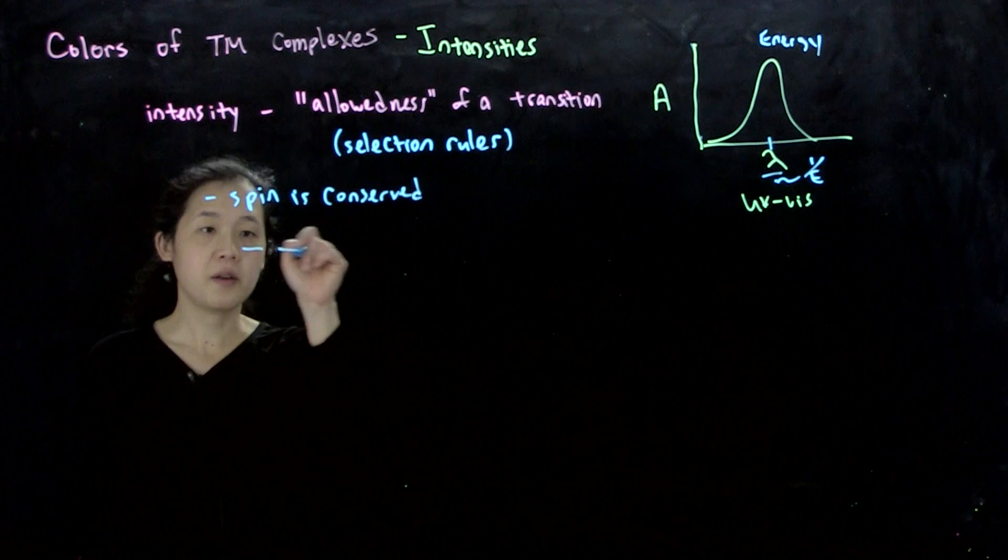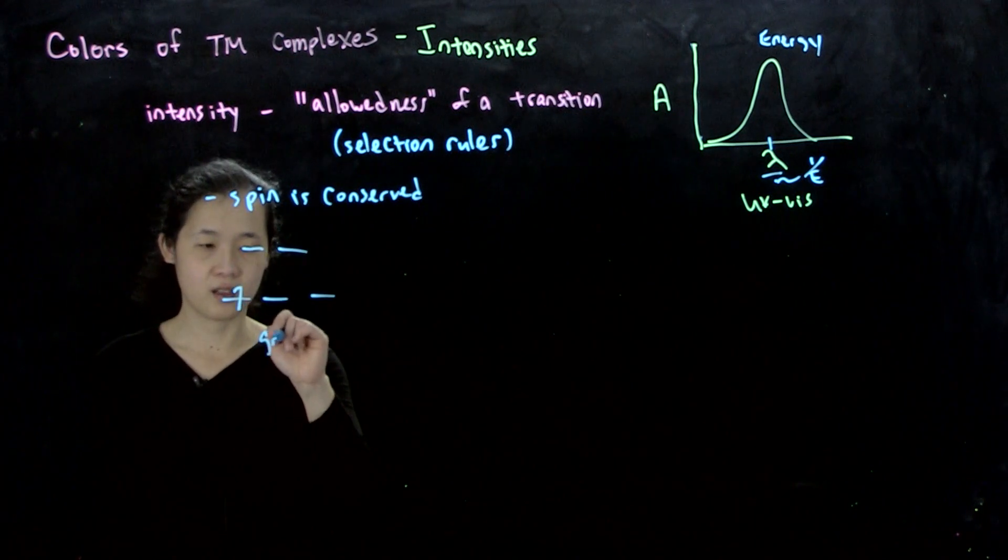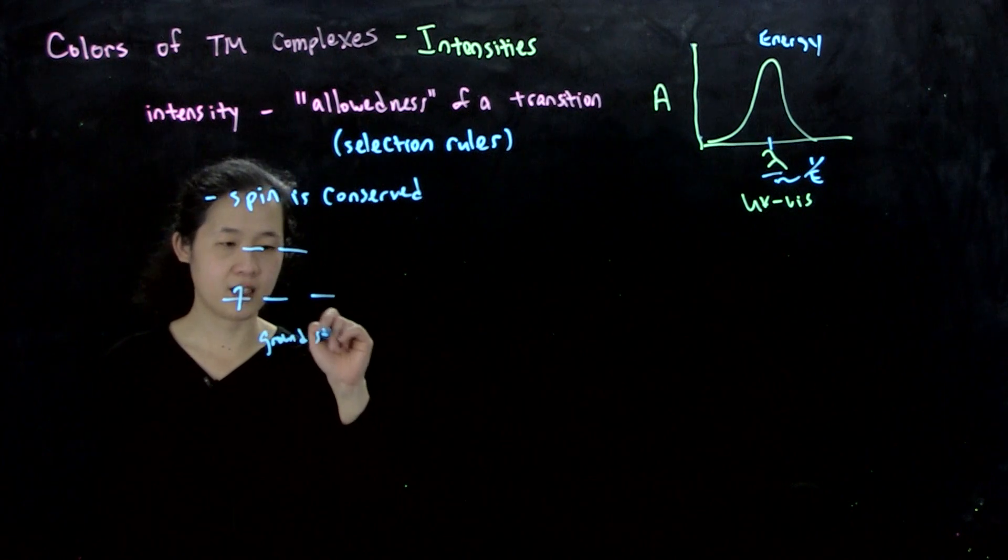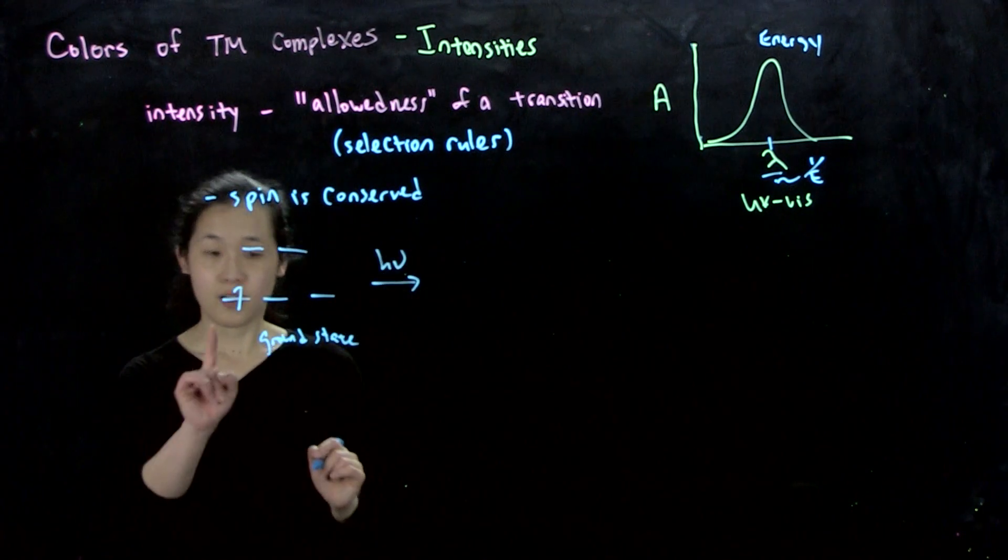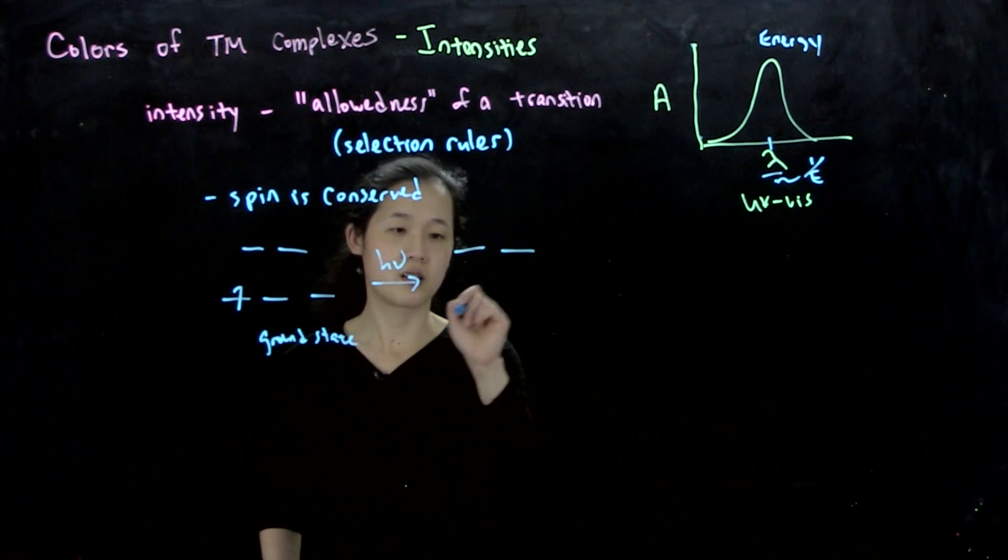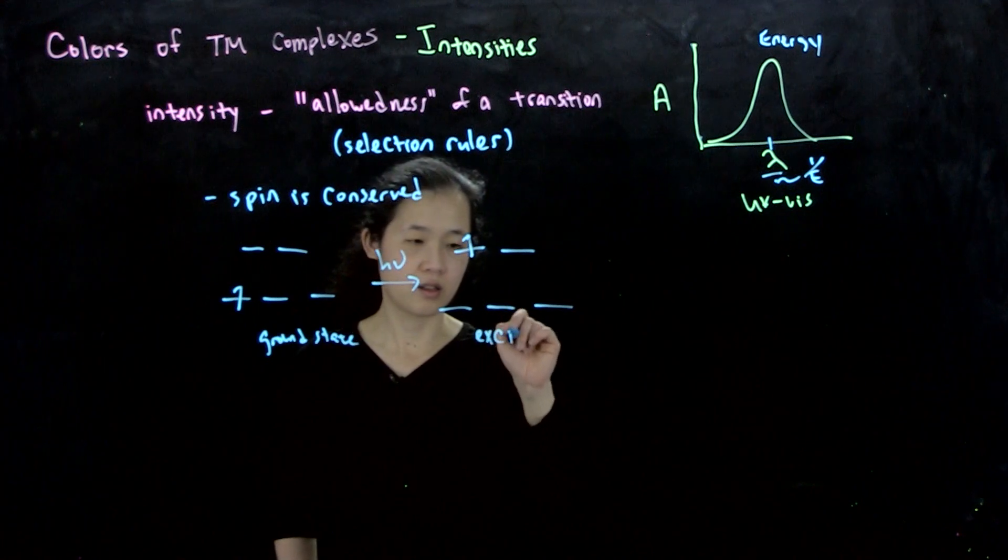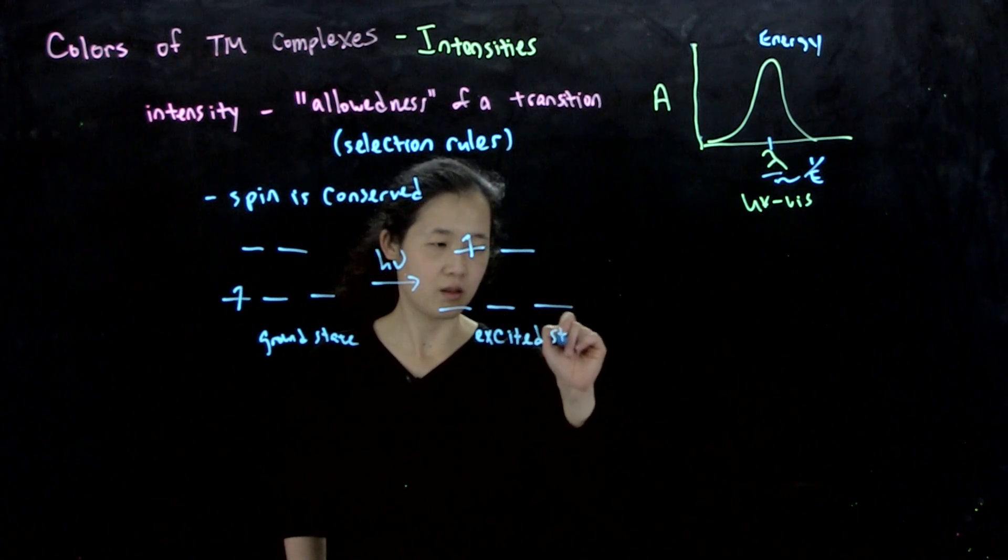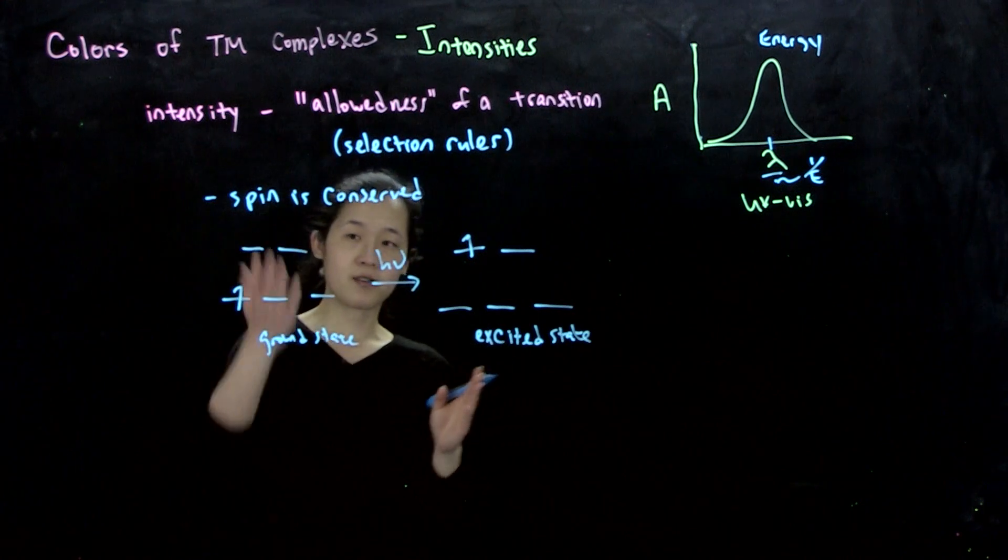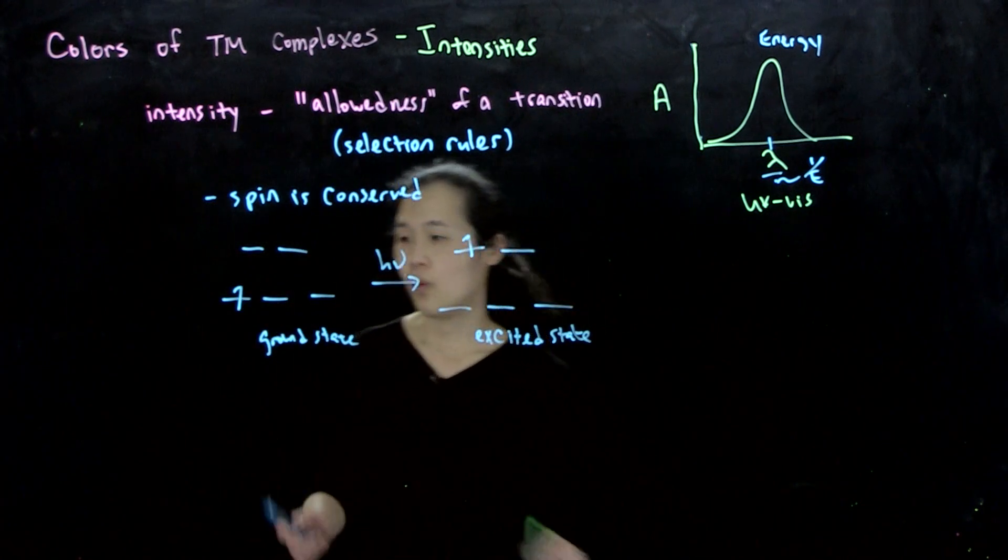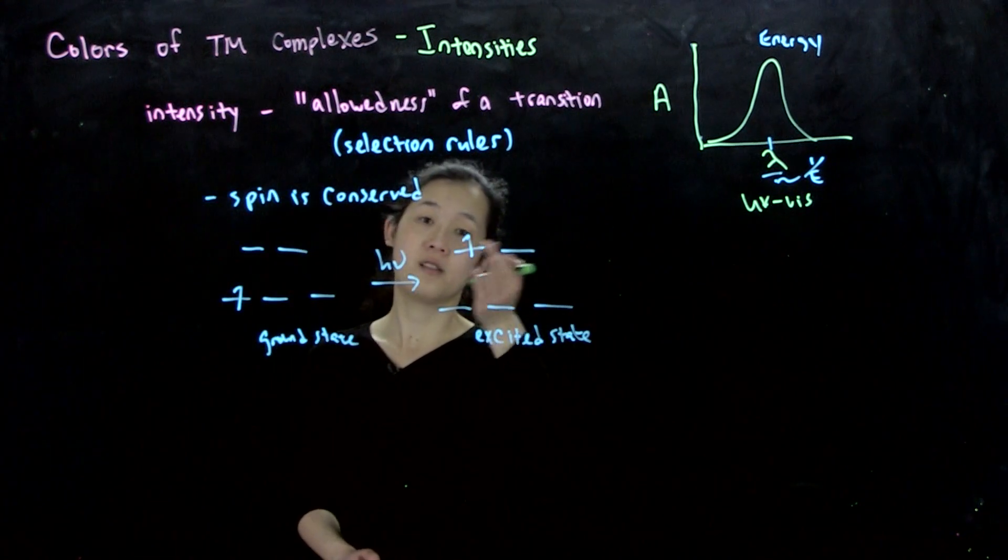By which I mean that suppose we have, let's say, our d1. This is our ground state. If we excite it with a photon, our electron goes up. So this is our excited state. And so when I say spin is conserved, we have to have one electron pointing up here, s equals one-half, and one electron pointing up in the final excited state.